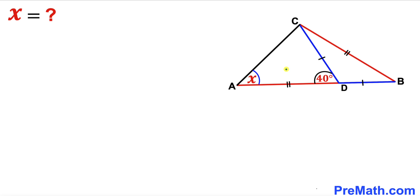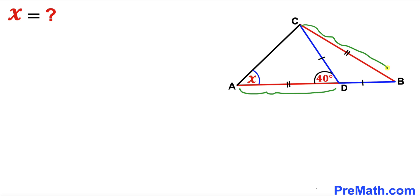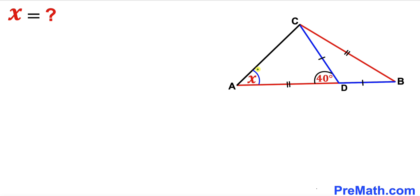In this video we have got these two triangles ADC and BDC put together in a big triangle ABC, such that segment AD is equal to segment BC, segment CD is equal to segment BD, and moreover this angle ADC is 40 degrees and this angle CAD is represented by X. Our task is to calculate this angle X.